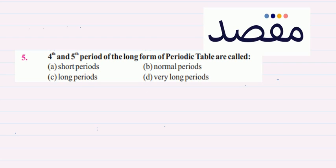Because each one of them consists of 18 elements. So basically, the option here is option C: 4th and 5th period of a long form of periodic table are